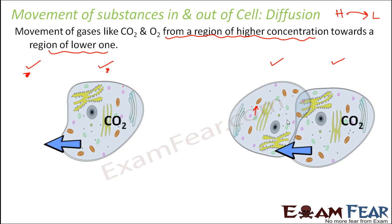Similarly, if it is the other way around — if the concentration of carbon dioxide is higher inside the cell — then it will start moving out of the cell, and the cell will start losing carbon dioxide to the external atmosphere. Likewise between two cells, if the concentration is higher in one, it will start moving toward the cell with lower concentration.